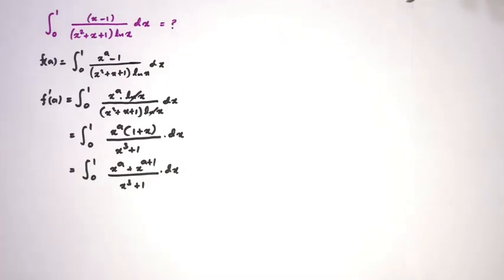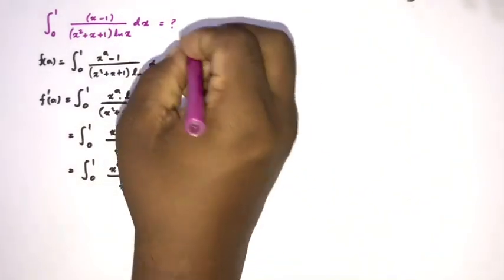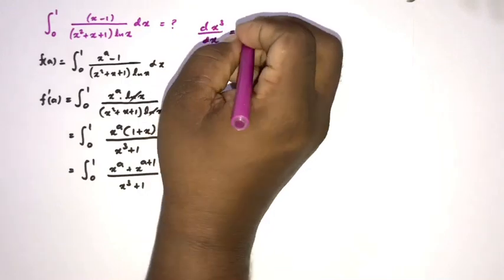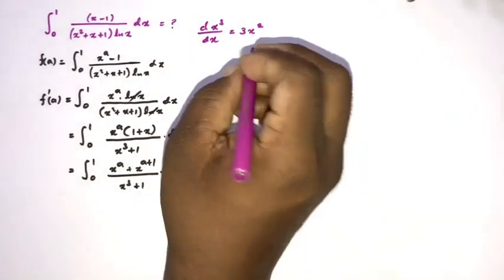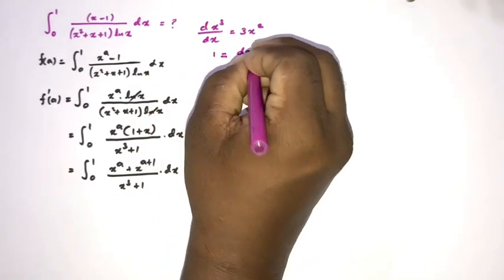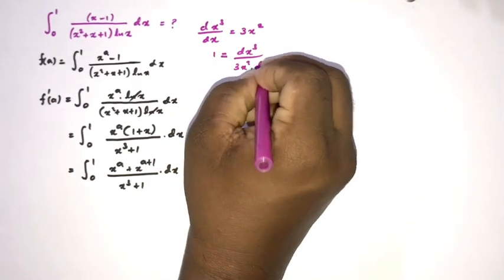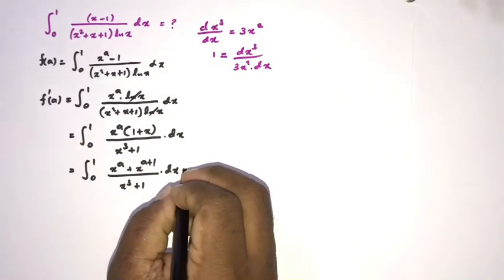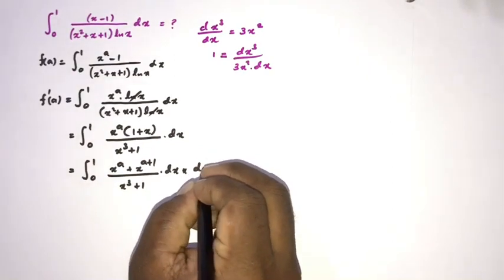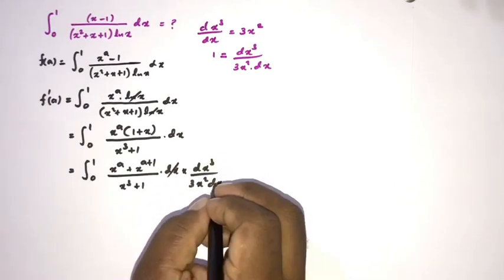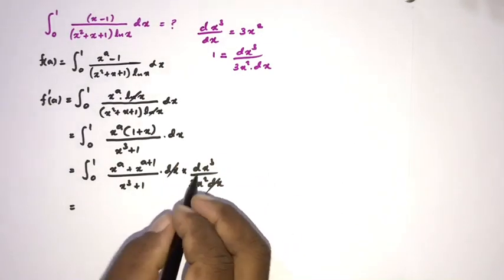Now since we have x cubed in the denominator, I will use the substitution based on d(x³)/dx = 3x². This means dx = d(x³) / (3x²), and the dx and x² terms cancel, leaving a constant factor of one third.